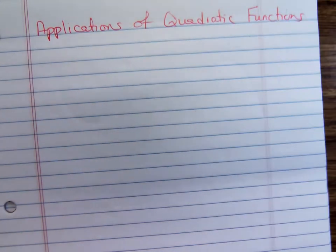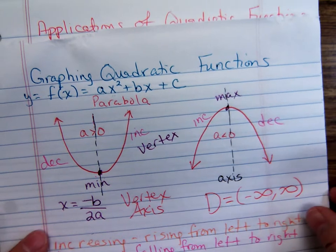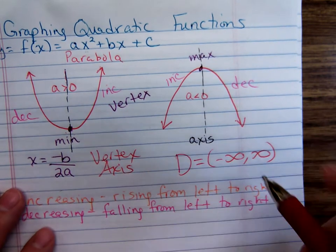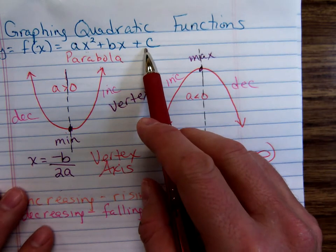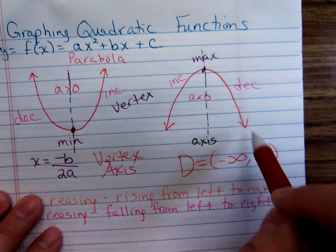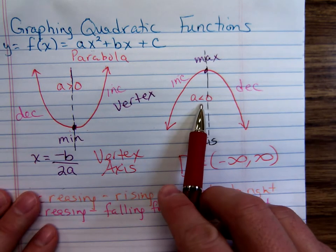We already said that a quadratic function is in the form f(x) = ax² + bx + c, and its graph is a parabola either opening up or down. It opens up when a is positive and down when a is negative.